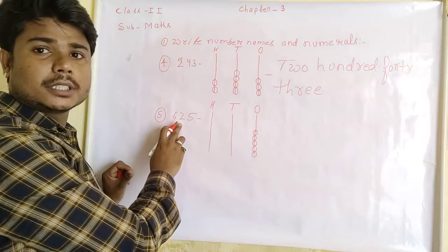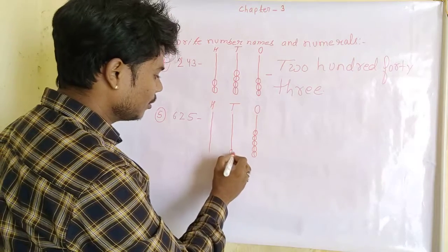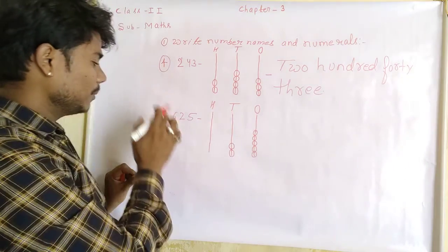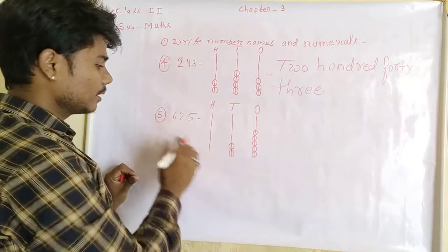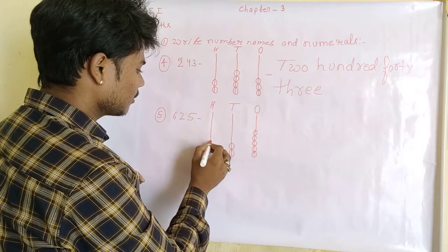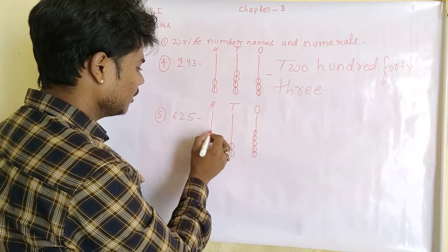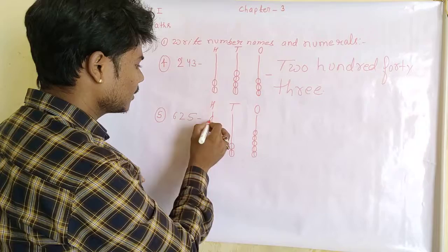The number in the tens place is 2, so we draw 2 small circles. And the number in the hundreds place is 6, so we draw 6 small circles: 1, 2, 3, 4, 5, 6.